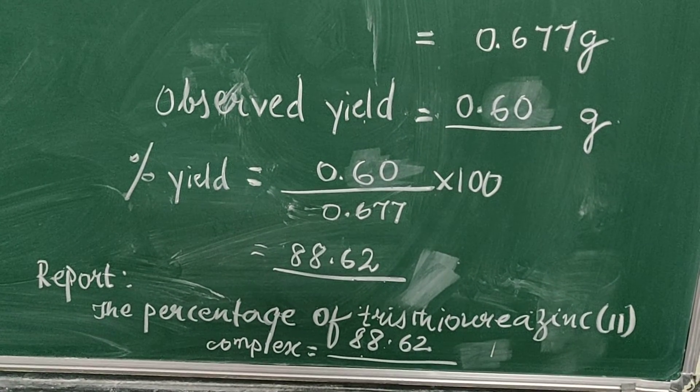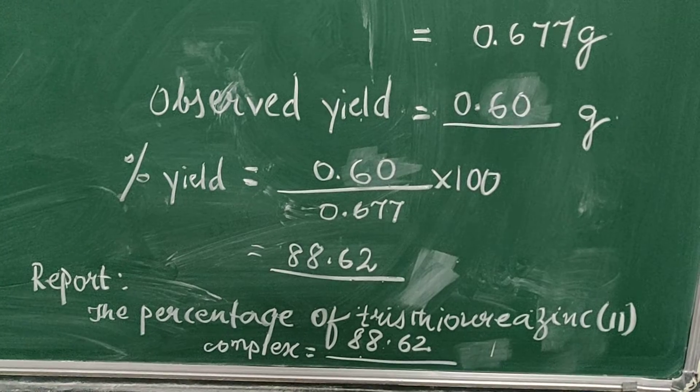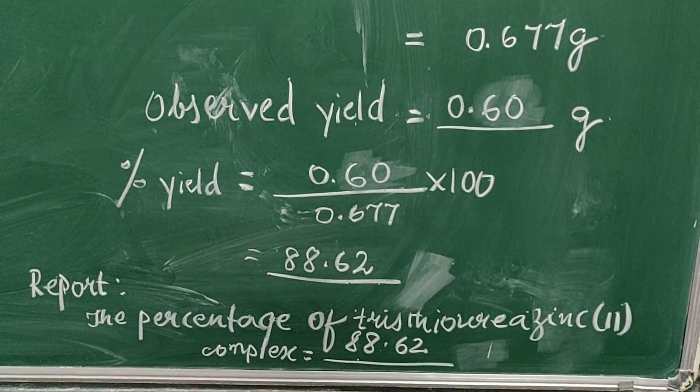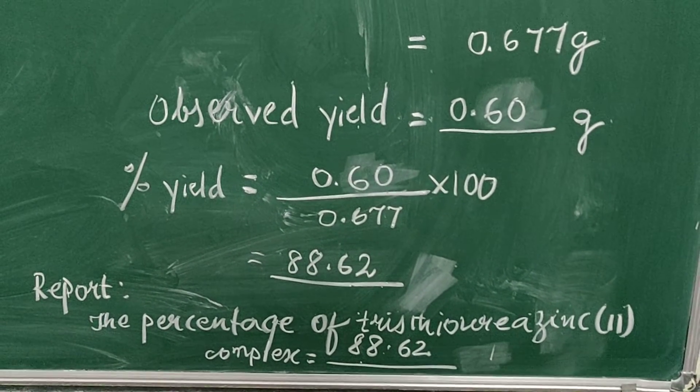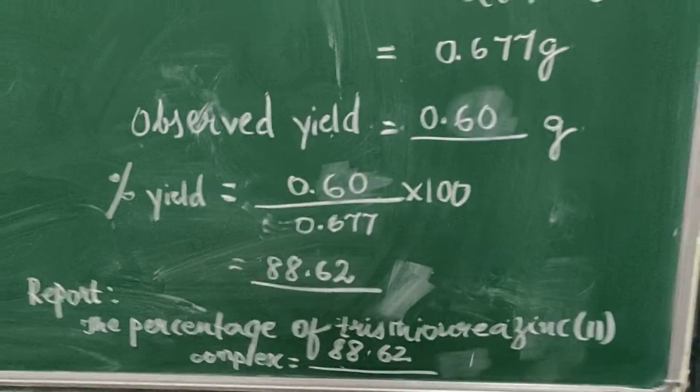Finally, the report will be: the percentage of tris(thiourea) zinc(II) sulfate complex is equal to 88.62.